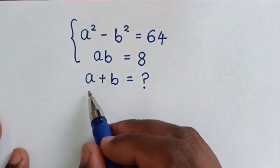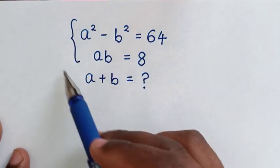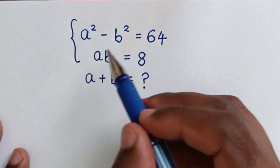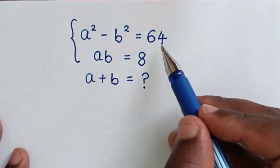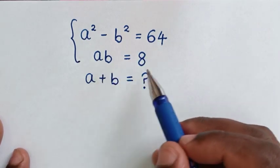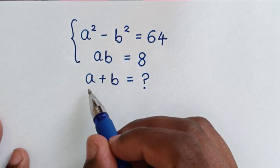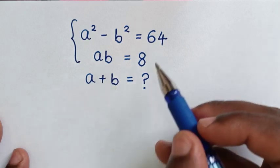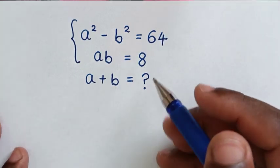Welcome. Solve this math problem: a squared minus b squared equals 64, and ab equals 8. Find the values of a plus b from these two systems of equations.